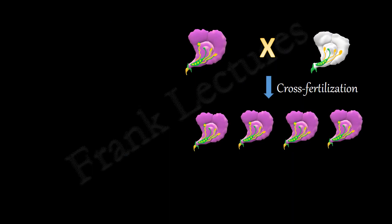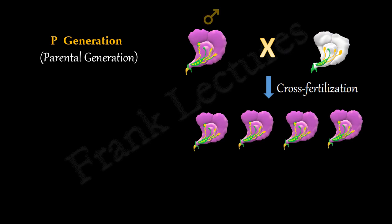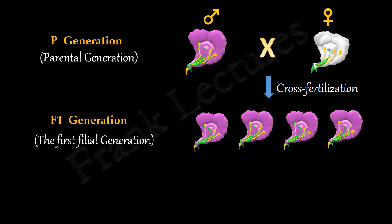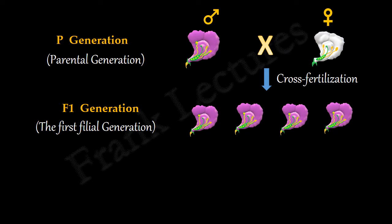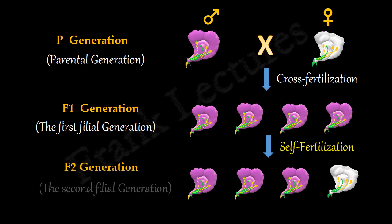The true breeding parents are called the P generation. P stands for parental. The first two individuals that are crossed in a breeding experiment are known as the P generation. The plant which provides the pollen is the male parent, and the plant which receives the pollen is the female parent. The hybrid offspring produced by this cross-fertilization is designated as the F1 generation, or the first filial generation. The word filial has been derived from the Latin term filialis, meaning of a son or a daughter. The progeny of the parental generation is always the F1 generation. When plants of the F1 generation self-fertilize or fertilize each other, their offspring are designated as the F2 generation, or the second filial generation.